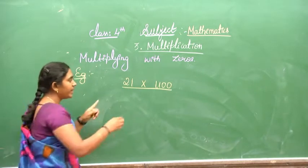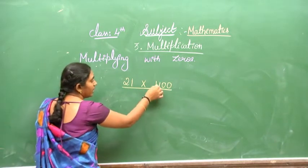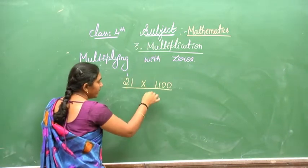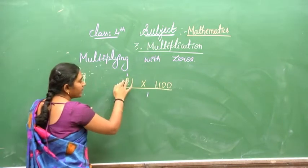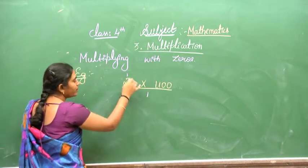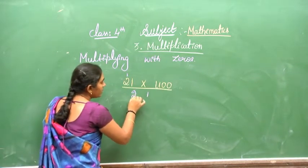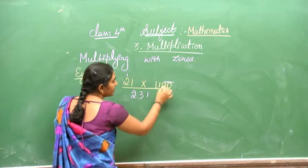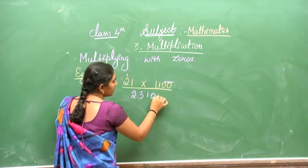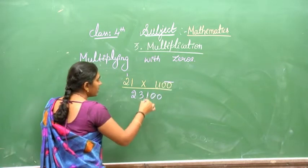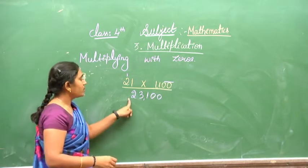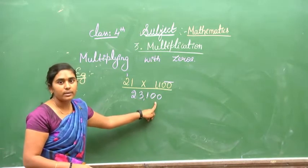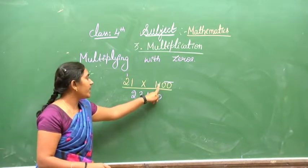11 multiplied by 21: 11 times 1 is 11, write 1 carry 1. 11 times 2 is 22, plus 1 is 23. Then append two zeros for the 1,100. The answer is 23,100.